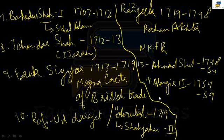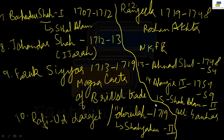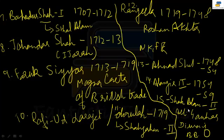Number 15 is Shah Alam II, also known as Ali Gauhar. He took part in the Battle of Buxar. Three people were in the Battle of Buxar: Shah Alam II, Shuja-ud-Daula of Awadh, and Mir Kasim the Nawab of Bengal. Shah Alam II gave away the Diwani rights for Bengal, Bihar, and Odisha to the English. Delhi was captured by Lord Lake at this time.